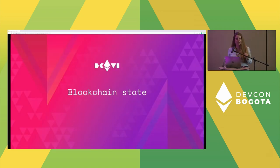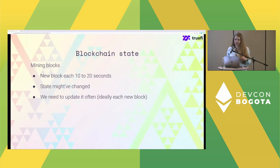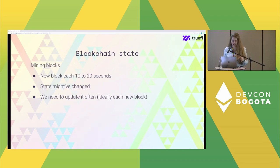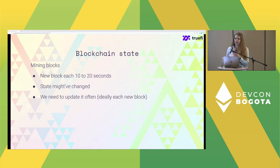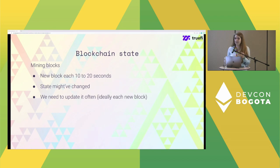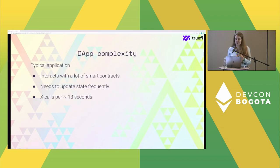Let's talk about blockchain state for a second. It's all about mining blocks — each new block is around 15 seconds. The state might change, so each time we need to check whether a new block changed our state. Our application needs to be updated very often — ideally on each new block. Additionally, the app is very complex.